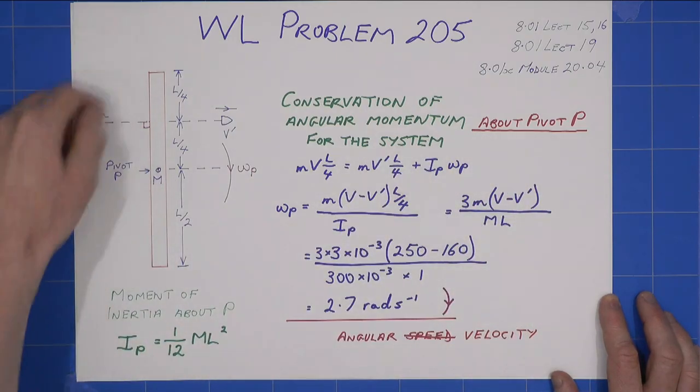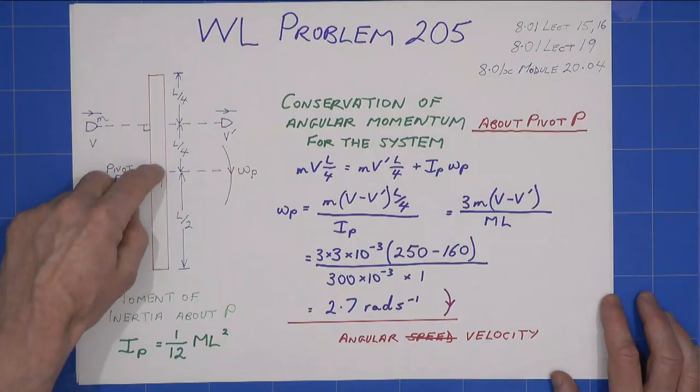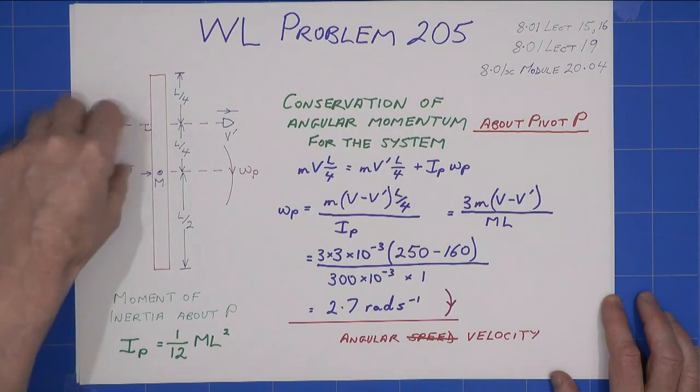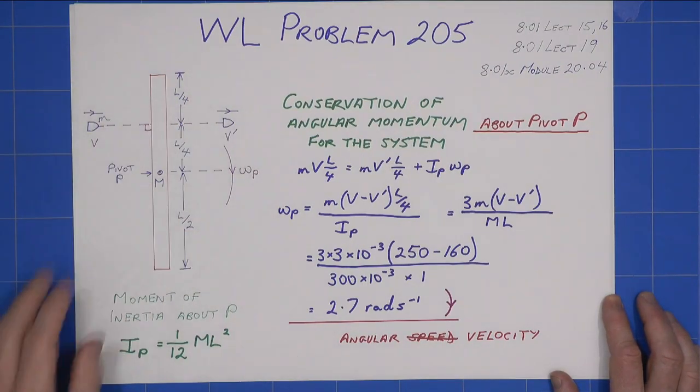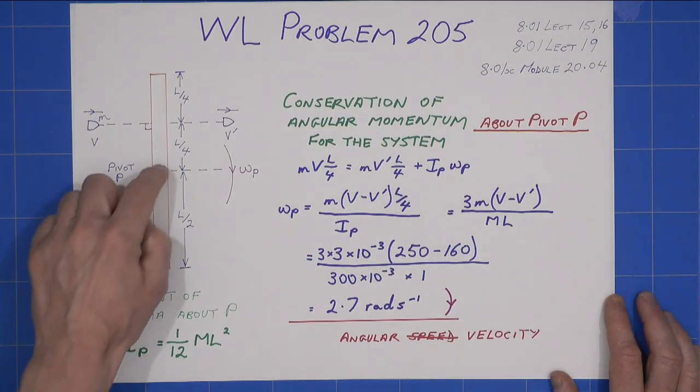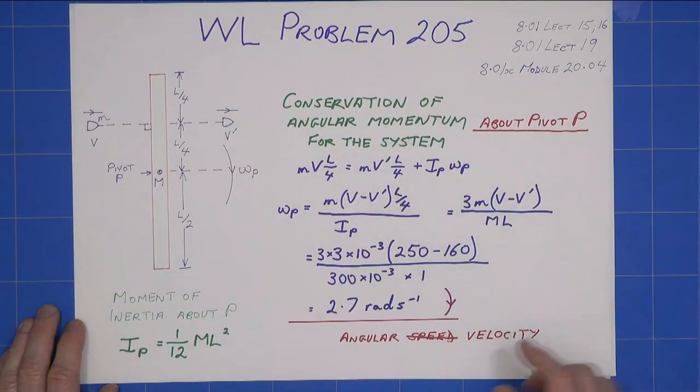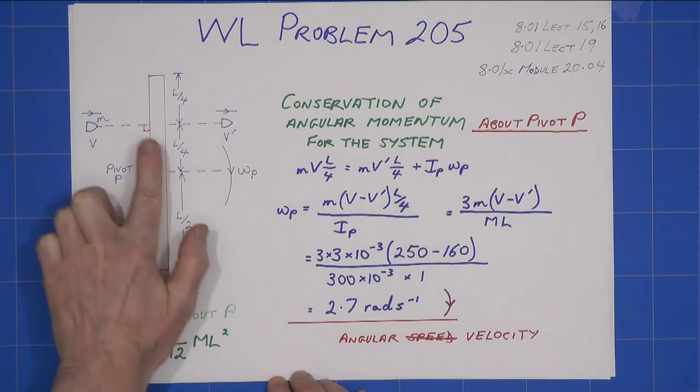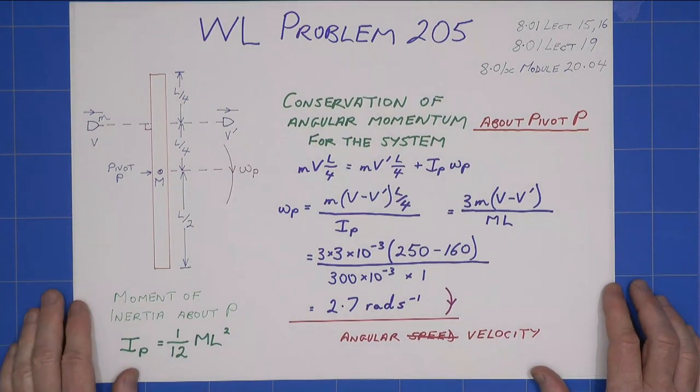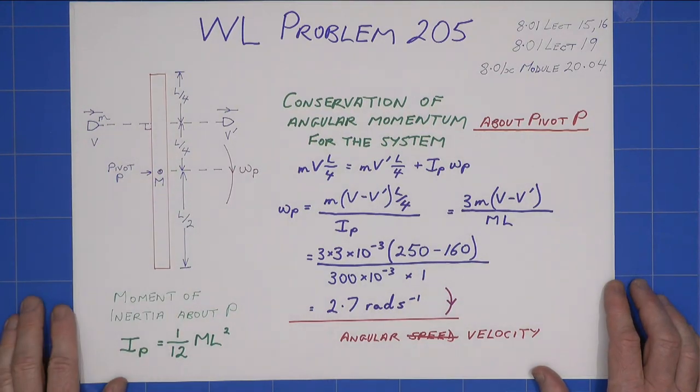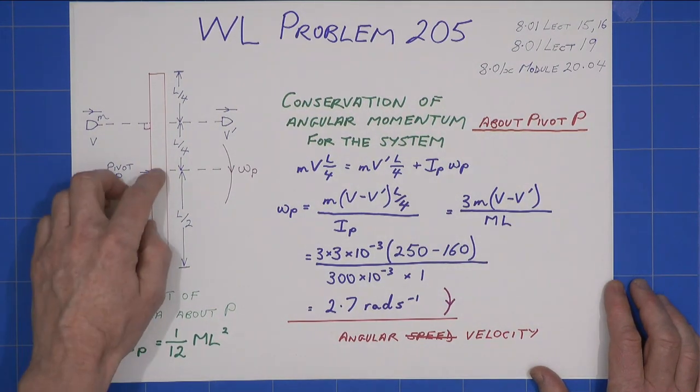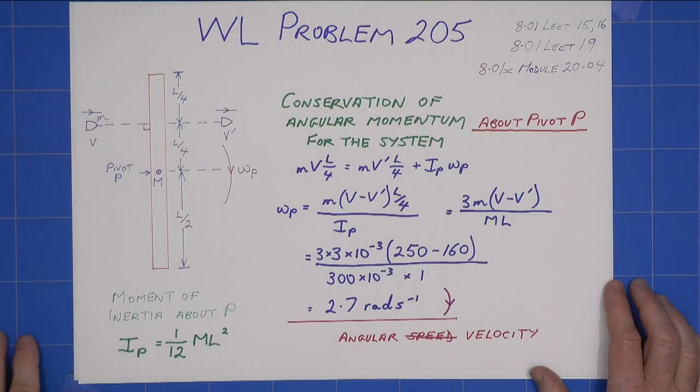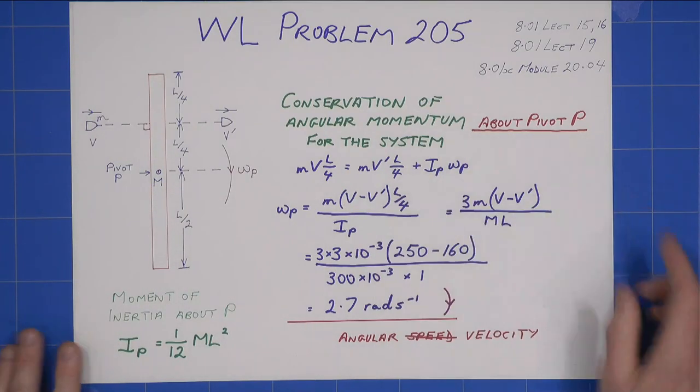We're going to use conservation of angular momentum about the pivot point. If you try and take it about anywhere else, then the pivot, the reaction at the pivot, will contribute a torque to what you're trying to do. But at the pivot, any reaction, because it's multiplied vectorially by the radial distance from the pivot, that's going to be zero. Radial distance is zero, so there is no torque at the pivot. Hence, conservation of angular momentum.